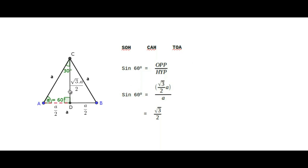Now, sine 60 degree is opposite over hypotenuse. The opposite for 60 degrees is CD and the hypotenuse is AC in triangle ACD. So sine 60° = (√3/2)·A divided by A. The A's cancel and the value is √3/2. You may observe that the ratio is free from the value A — that is, for any right triangle the length does not affect the value of sine 60 degree.